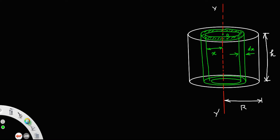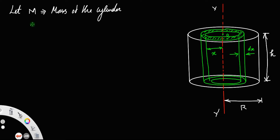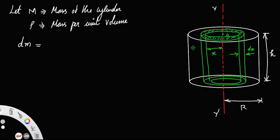Let m be the mass of the cylinder and let rho be the mass per unit volume. The mass of this hollow shell, which we take as dm, will be the volume of the hollow shell times its density — the mass per unit volume rho.